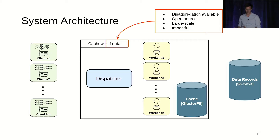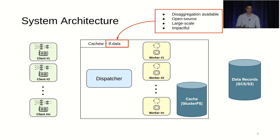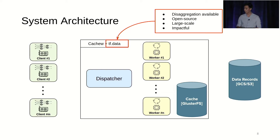Because we build on top of TF Data Service, we inherit some of its main components: the dispatcher, which is essentially the brain of the operation, and the workers, which are the stateless entities that fetch data, preprocess it, produce batches, and give them to the client. In CacheU, we augment the logic of these components and also add a caching layer represented here by GlusterFS, which we chose because it scales very well and gives us the throughput we need.